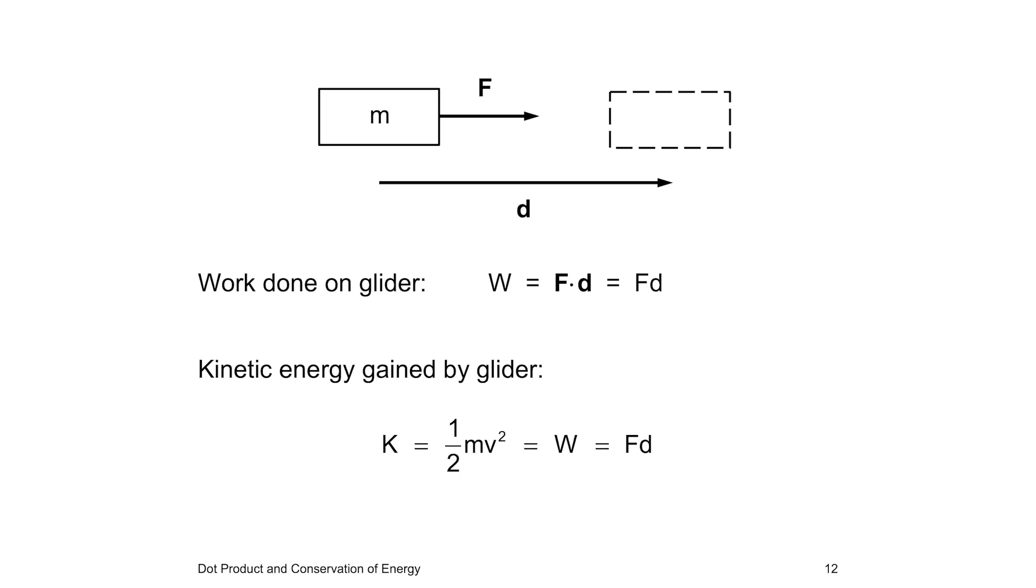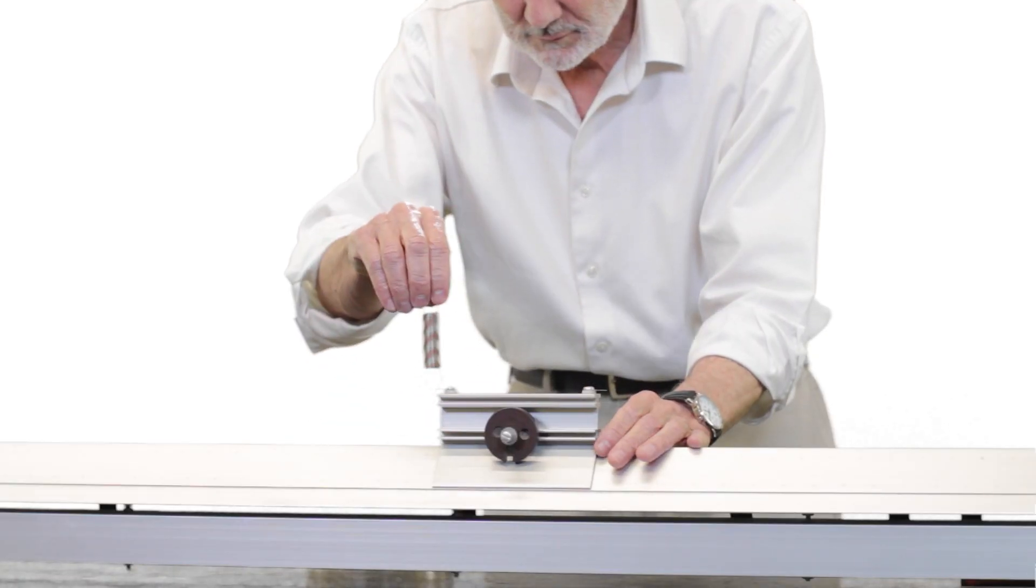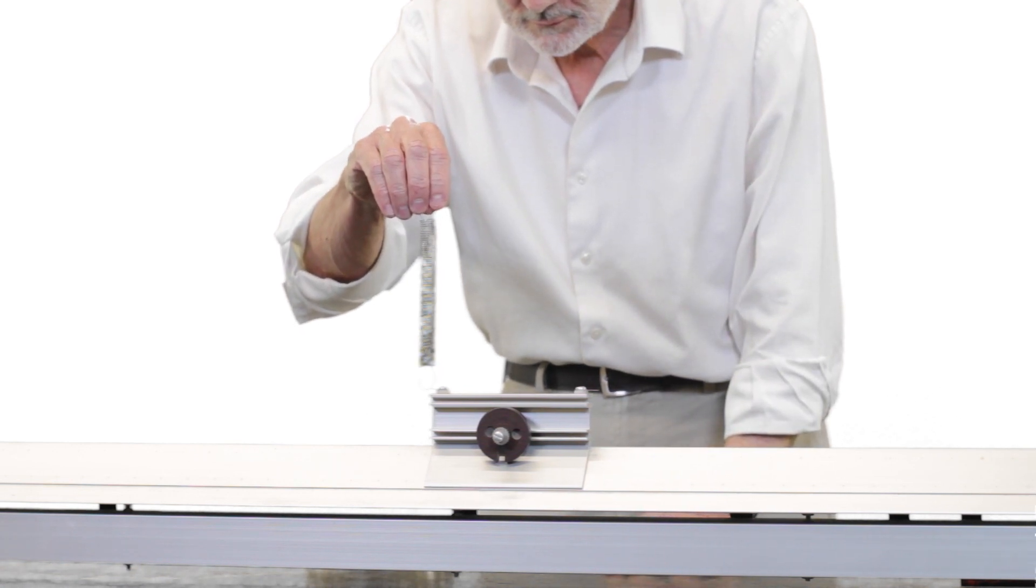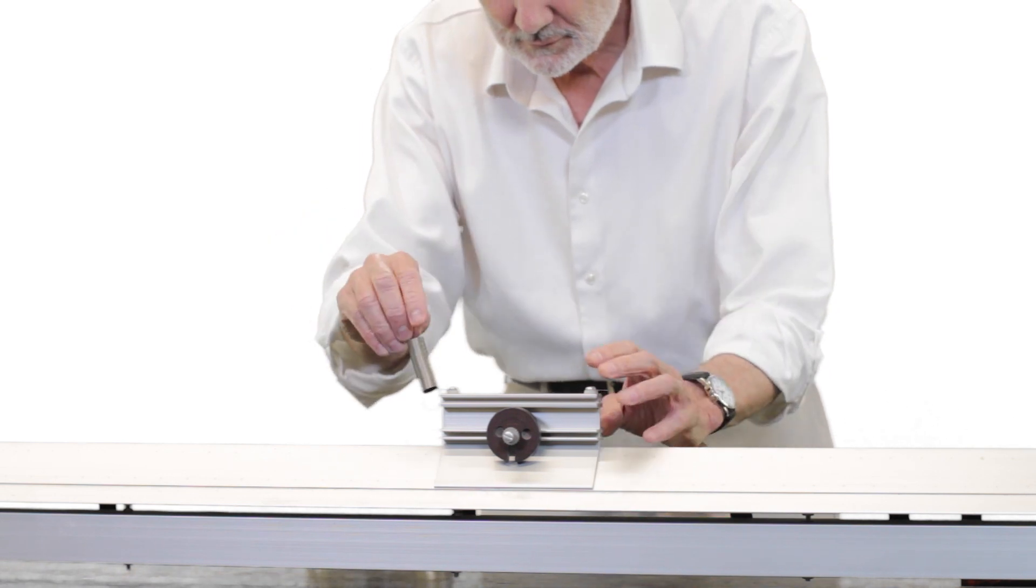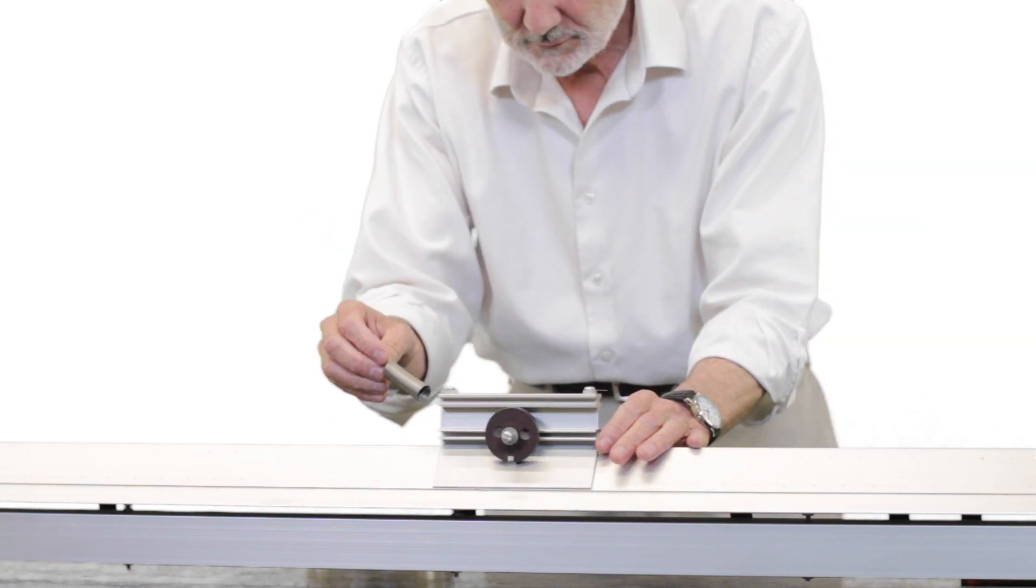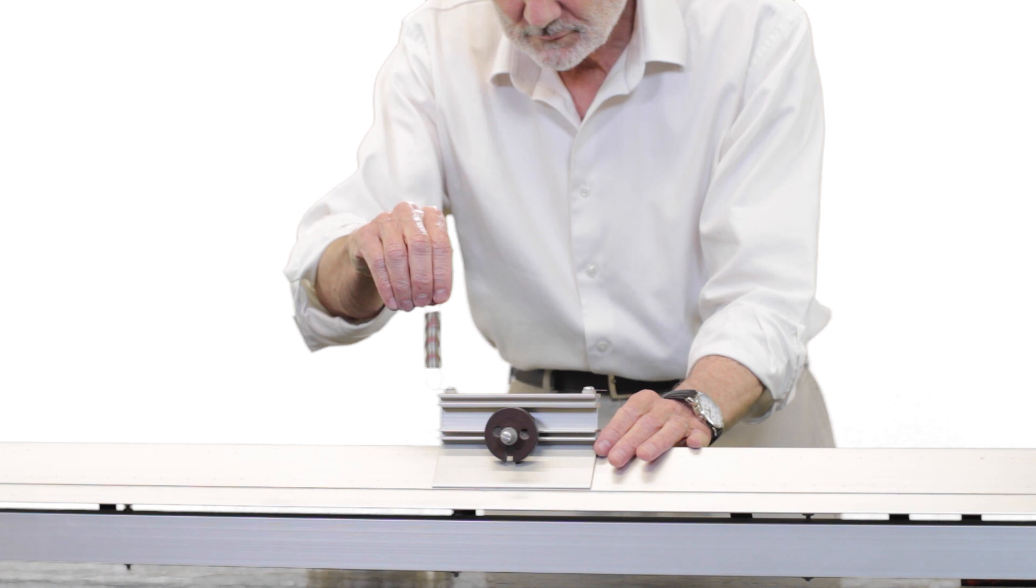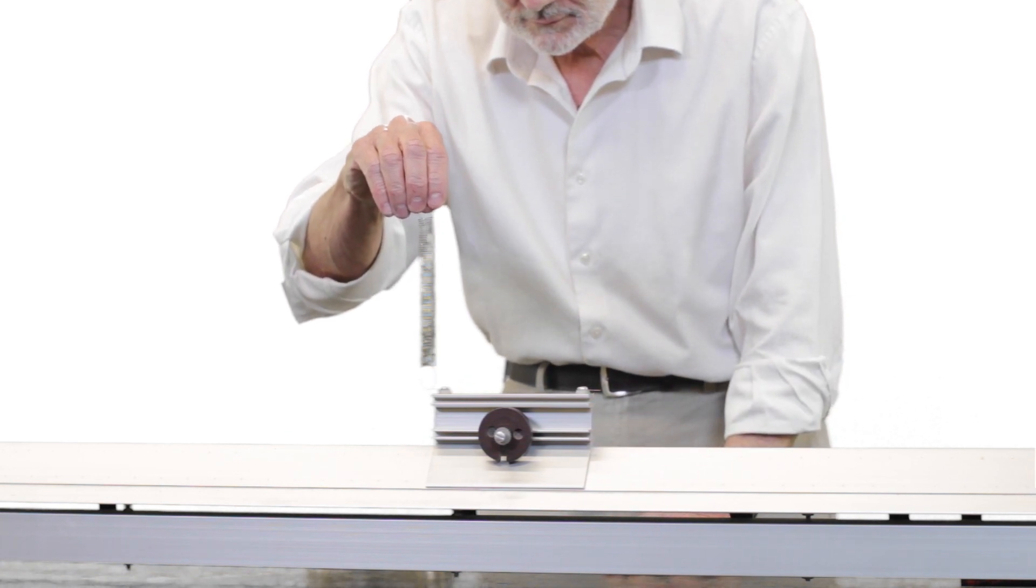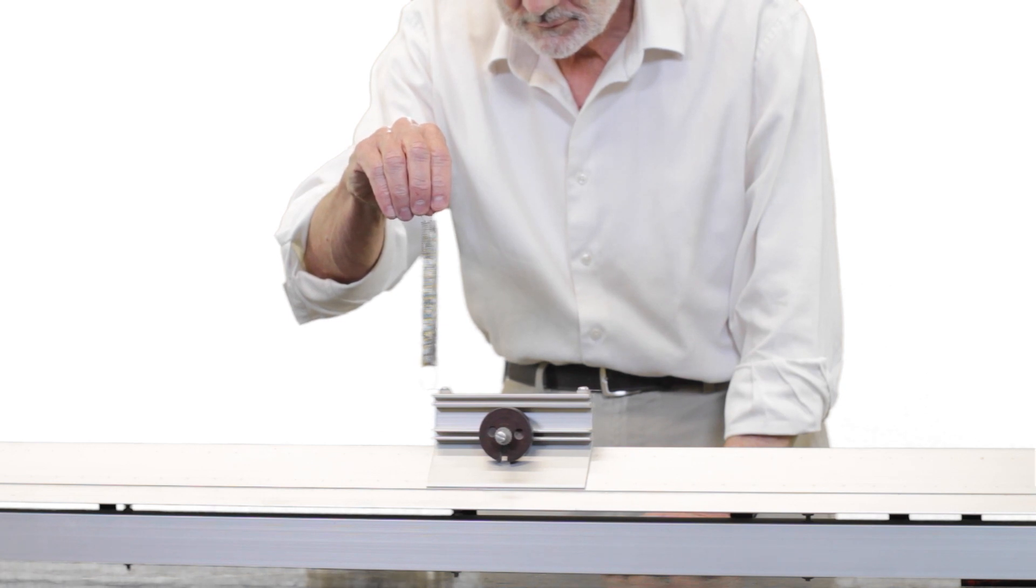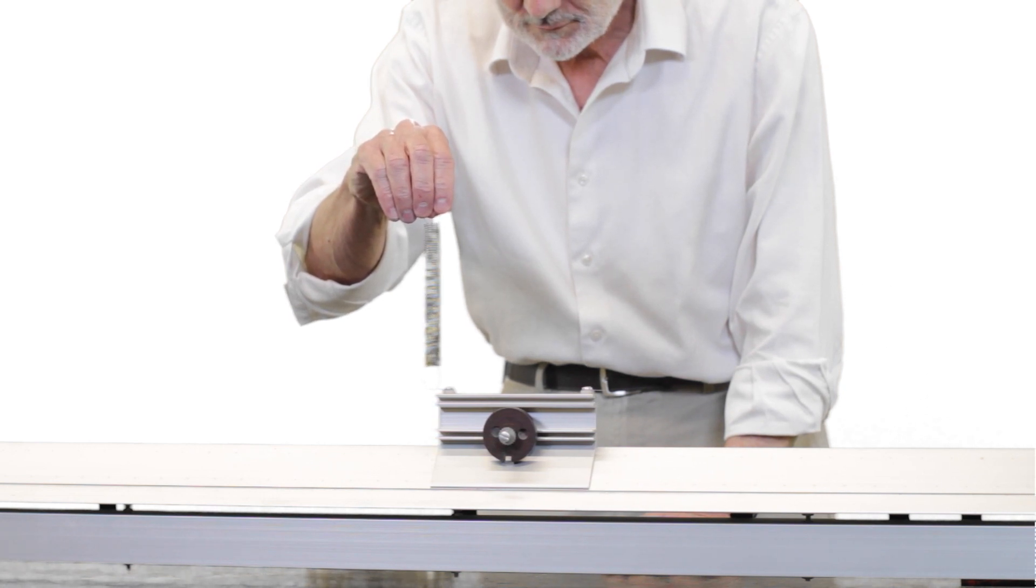Potential energy is not involved here. But what happens if I exert a vertically upward force on the glider? As long as the glider remains on the track, nothing changes. But aren't I doing work on the glider? No. The dot product is zero here because the force and displacement are perpendicular to each other. Theta is equal to 90 degrees, so the work is zero.